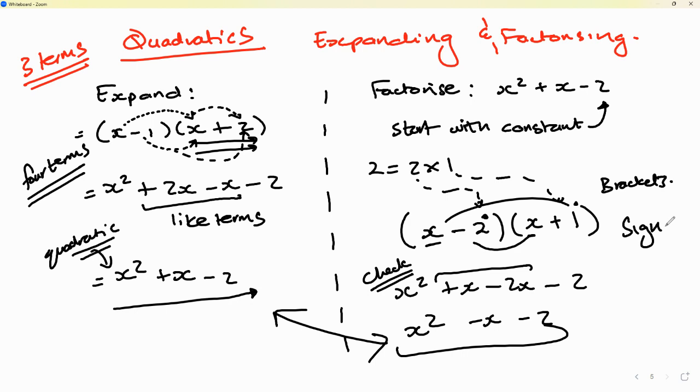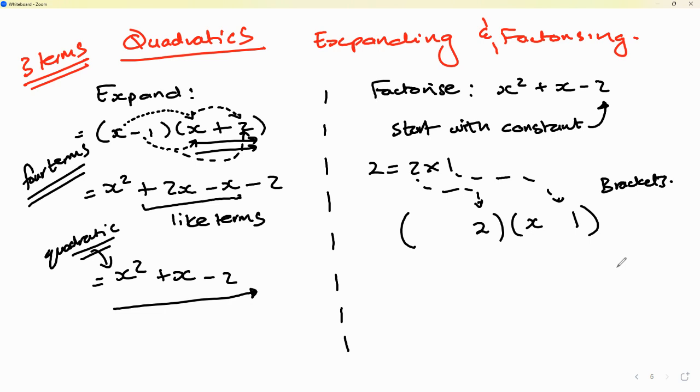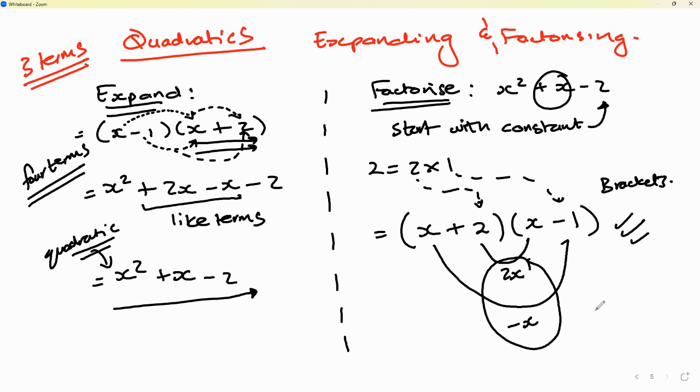So we know we got the signs wrong. We have to make this into a plus and make that into a minus. Let's suppose I make this now minus and I make this plus and I do a quick check. You can use what is known as the smiley face method. Put two smiley faces. This gets you 2x, that gets you negative x, and the middle term is positive x. So then this is the correct answer. And now we factorized. Remember factorizing is about creating brackets here. Expanding is about removing the brackets.